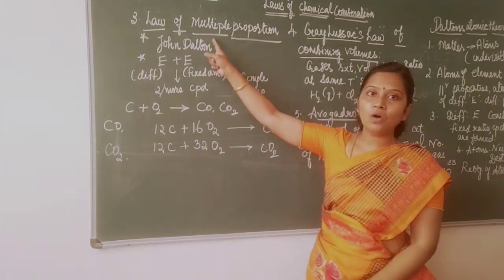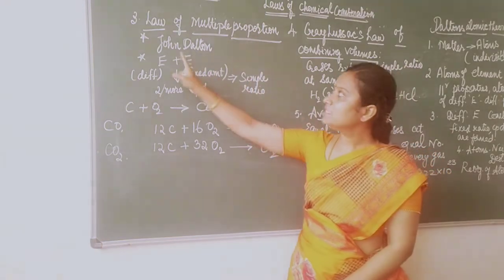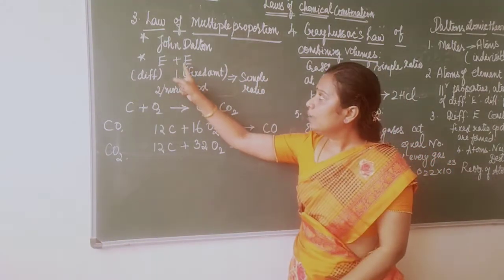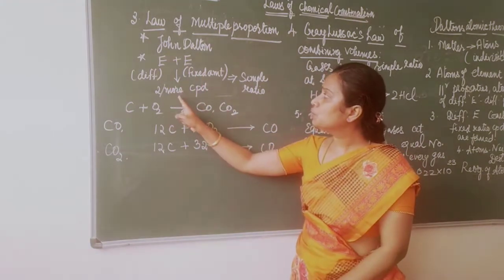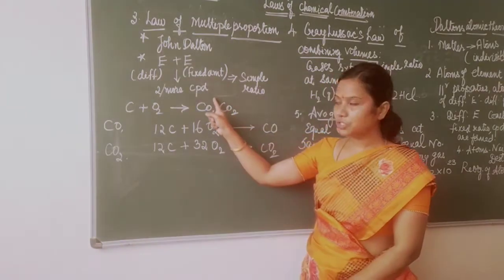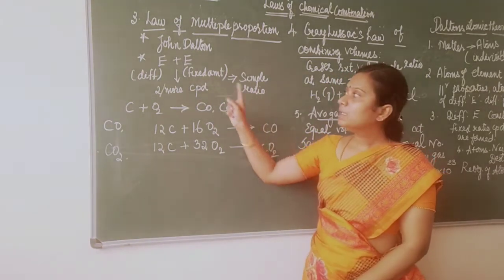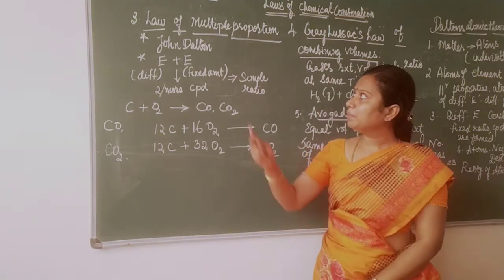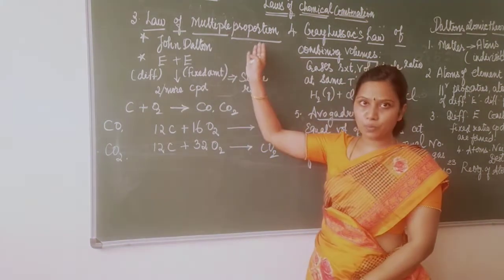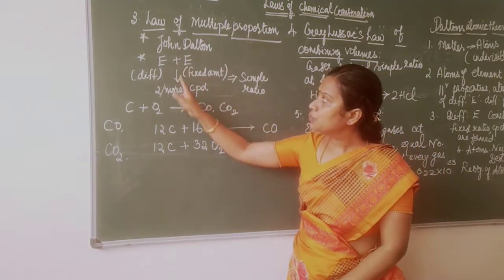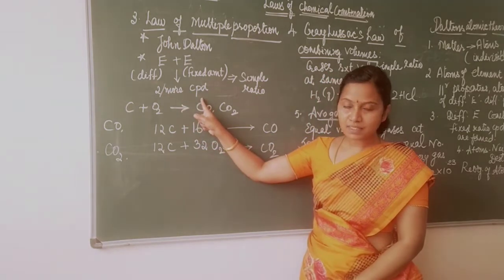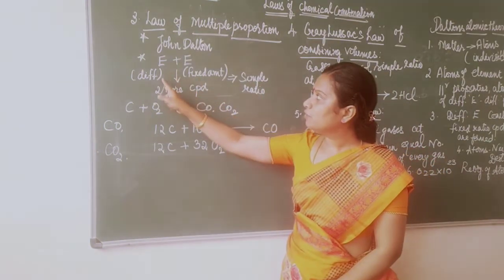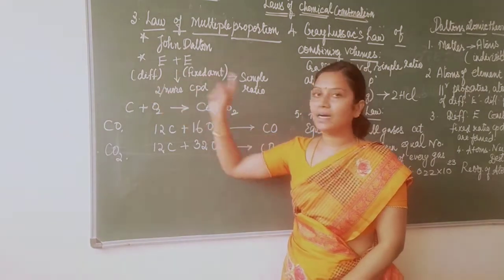Coming to the third law, that is the law of multiple proportion. This law was proposed by the scientist John Dalton. What does this law suggest? When two elements combine to form two or more compounds, they combine in such a way that they bear a simple ratio. One element will have a fixed proportion while the other element differs in mass.